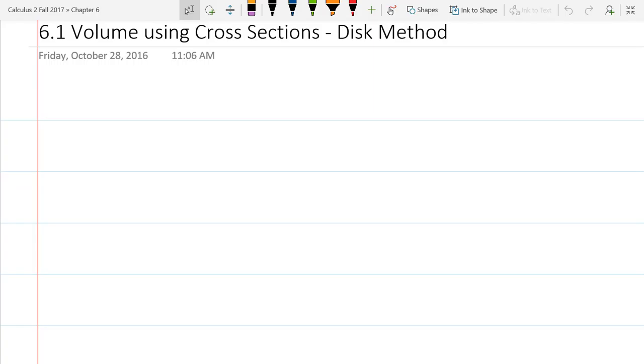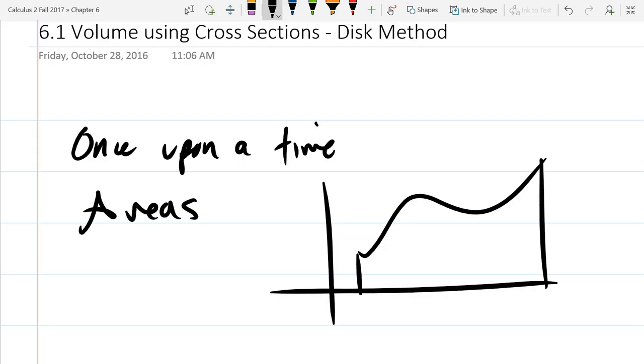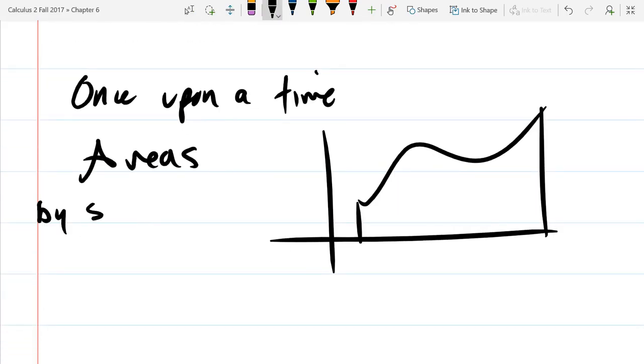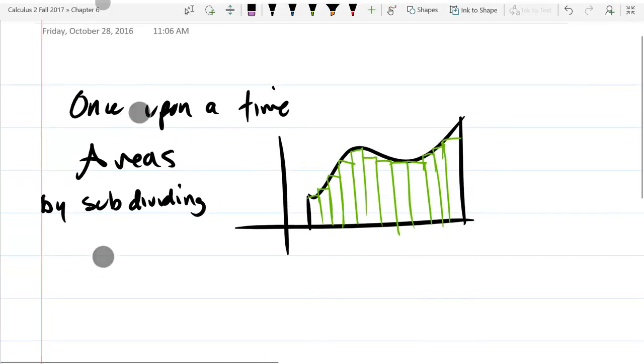So the first way we're going to look at volumes is just like with areas. If you remember about areas back in the day, once upon a time, we had areas. So we wanted to get the area under the curve. So what we did is we broke it into small pieces and then added up rectangles. So we did areas by subdividing. So we just came through and basically estimated using rectangles. I'm not going to go through all the details, but... And we added up the area of all those rectangles. So the idea is we subdivided this up into pieces.